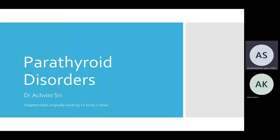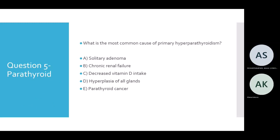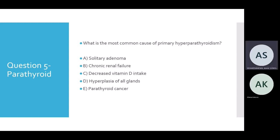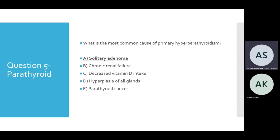Next section is on parathyroid disorders. SBA: what is the most common cause of primary hyperparathyroidism? The correct answer is A — solitary adenoma. Other causes include hyperplasia and carcinomas. Decreased vitamin D and chronic renal failure are more associated with secondary hyperparathyroidism.